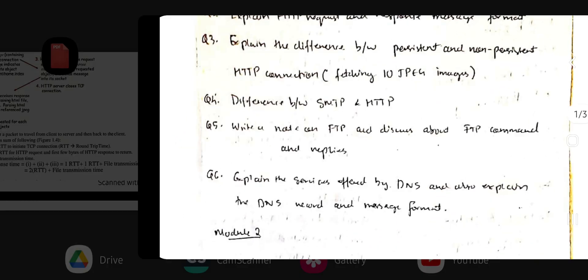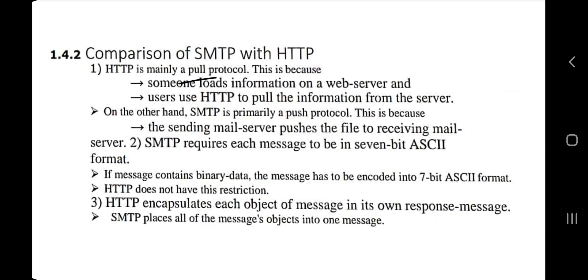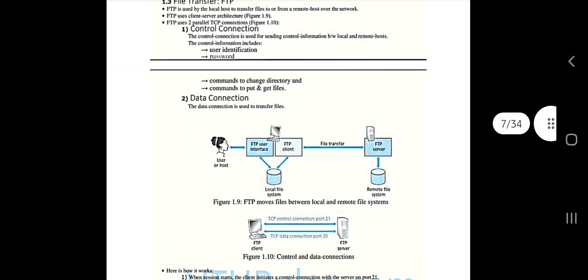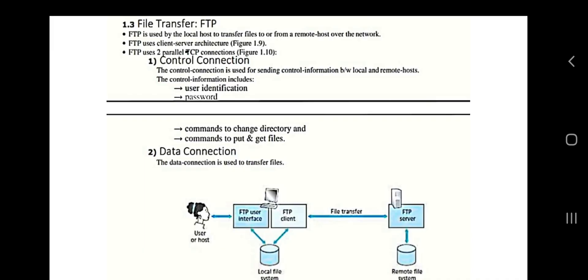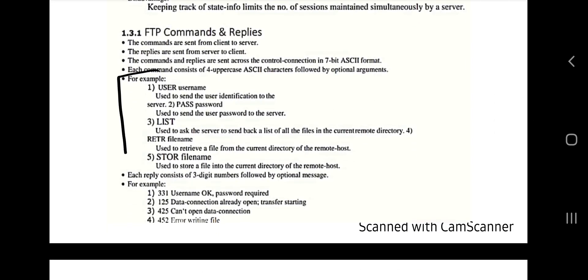The next important question is the difference between SMTP and HTTP. There are three differences to keep in mind: first, HTTP is a pull protocol while SMTP is a push protocol; second, SMTP uses a 7-bit ASCII format while HTTP has no such restriction; third, HTTP encapsulates objects in its own response message while SMTP places all messages into one object. Elaborate on these three differences. For FTP, write what it is (File Transfer Protocol), how the connection is established, how data is transferred, how the connection is broken, and list the FTP commands and replies.